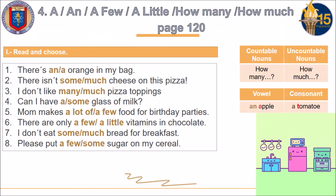The next topic is: a, an, a few, a little, how many, and how much — on page 120. Use 'how many' when you can count things. Use 'how much' for uncountable nouns. For articles: use 'an' when the next word has a vowel sound — for example, 'an apple.' Use 'a' when the next word has a consonant sound — for example, 'a tomato.' Now let's practice.